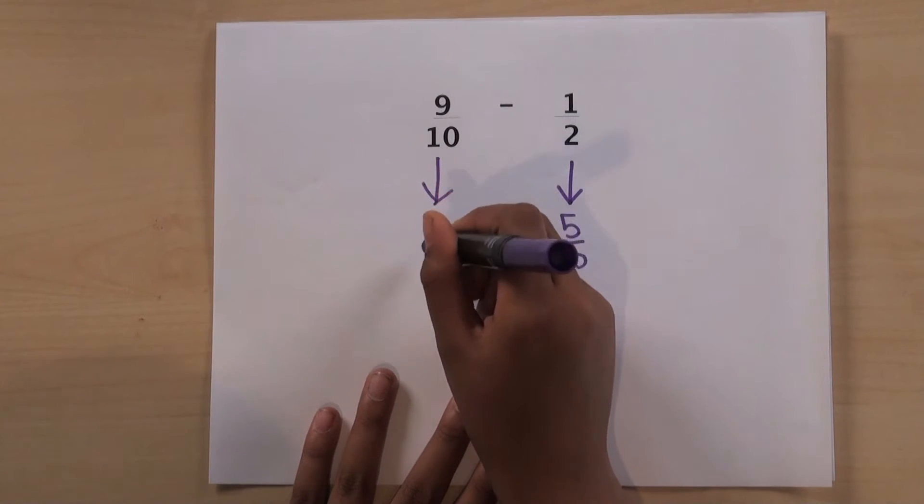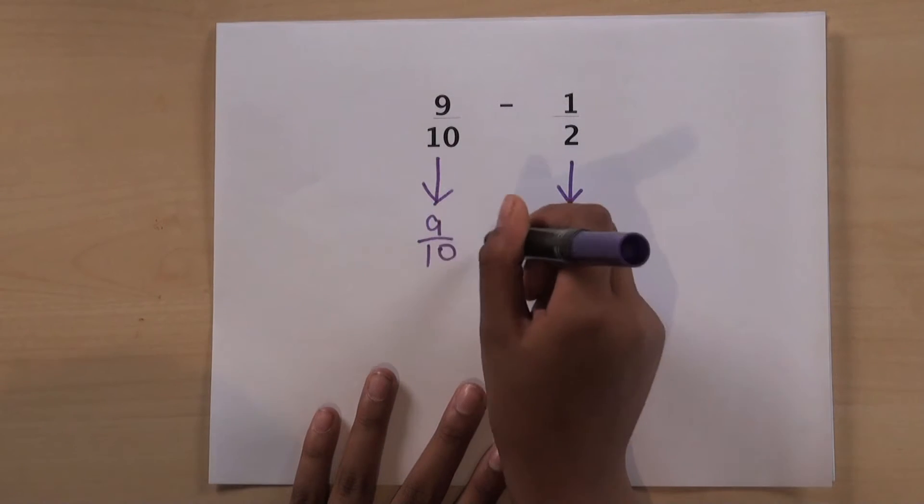In fifth grade, your child will be learning to add and subtract fractions with unlike denominators, or different bottom numbers.